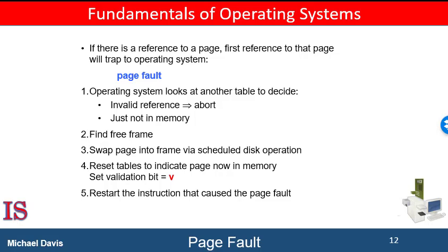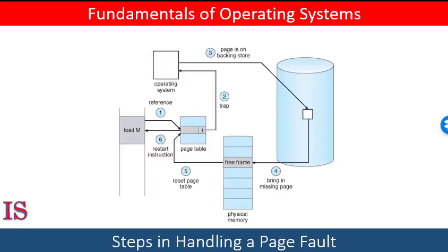This trap is the result of the operating system's failure to bring the desired page into memory. A trap is a kind of interrupt caused by an error — in this case, the error is that the page is not in memory. The process for handling this page fault is straightforward. First, we check the internal table kept in the process control block for this process to determine whether the reference was valid or invalid.